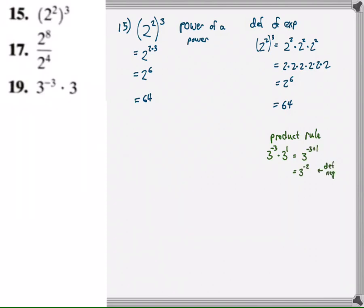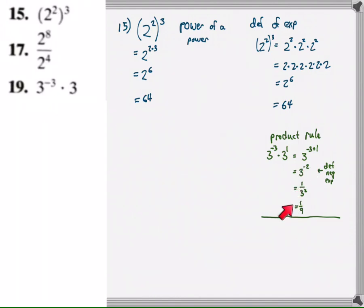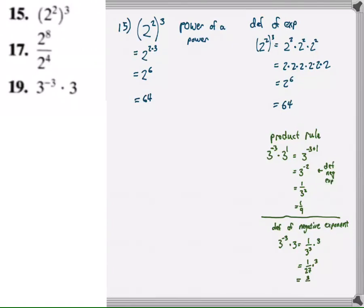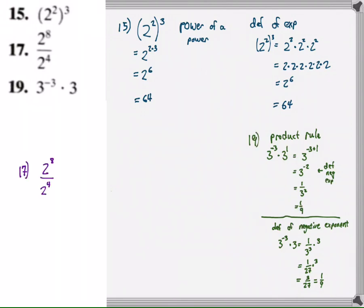For number 19, we have 3 to the negative one times 3 to the one. The product rule says add the exponents when the bases are the same: 3 to the negative one plus one equals 3 to the negative 2, which by definition of negative exponents equals 1 over 9. Another way: apply definition of negative exponents first — 3 to the negative 3 is 1 over 27, times 3, which is 3 over 27, or 1 over 9. That demonstrates a deeper level of understanding than just memorizing a shortcut.